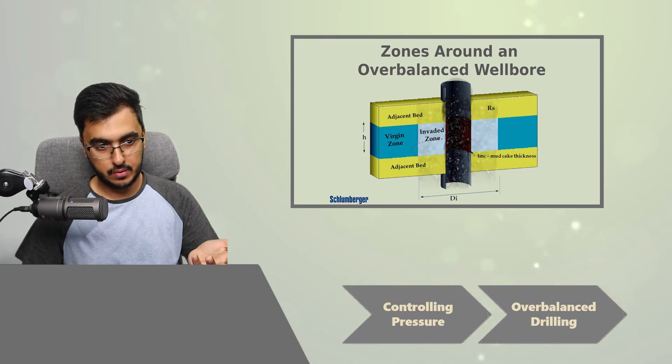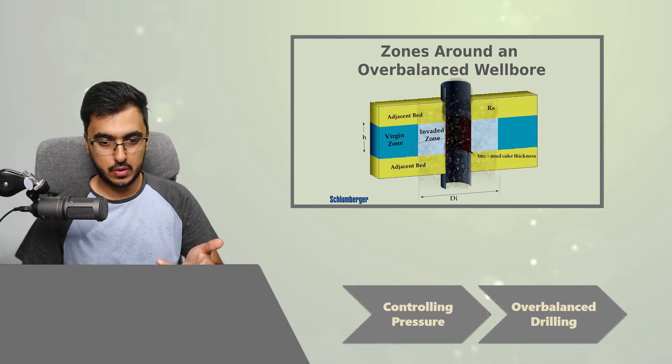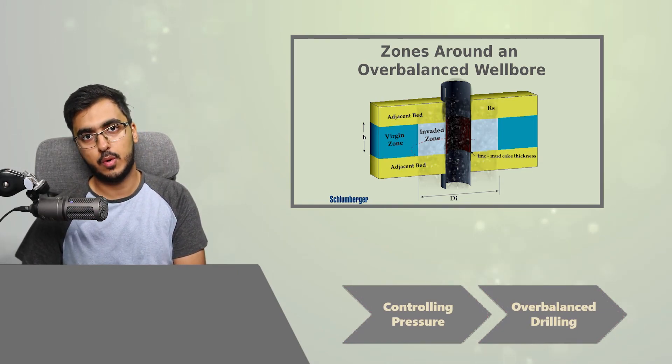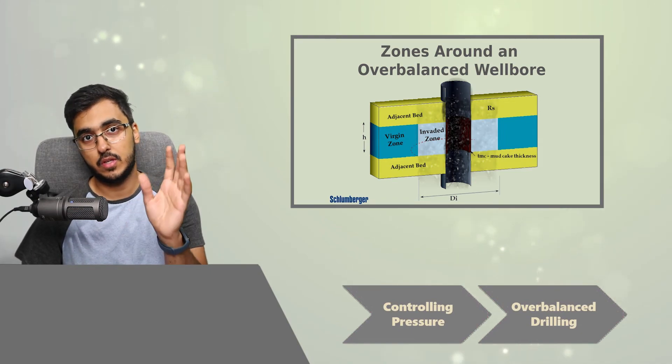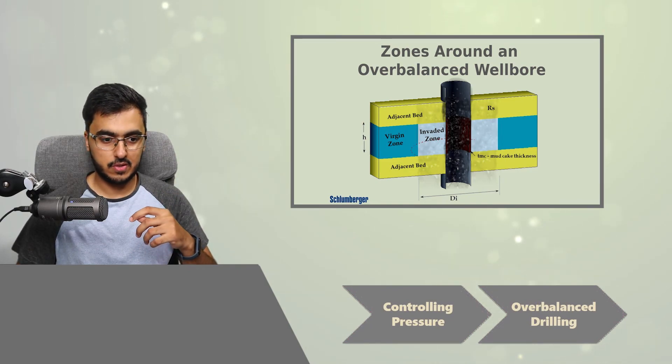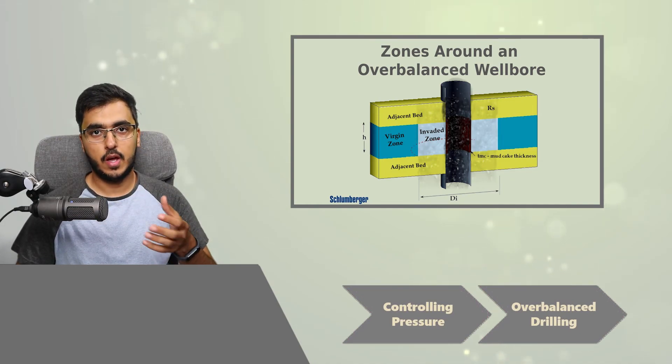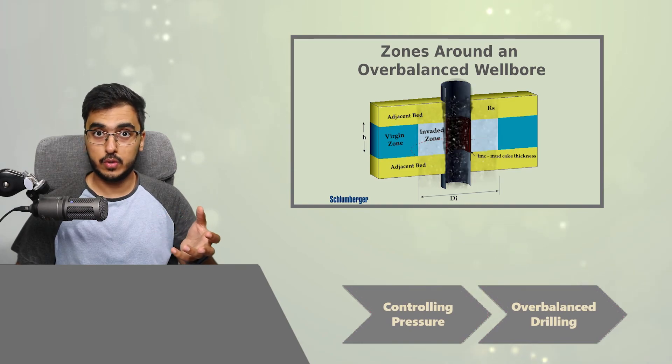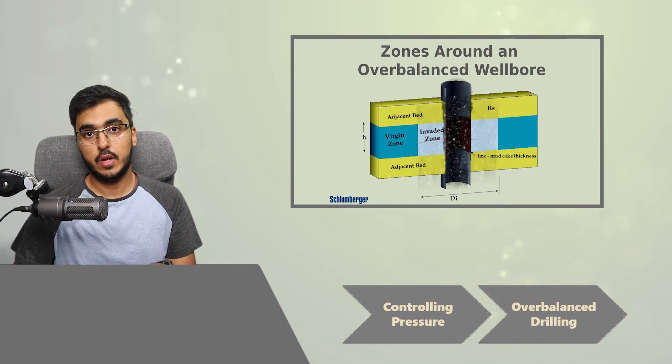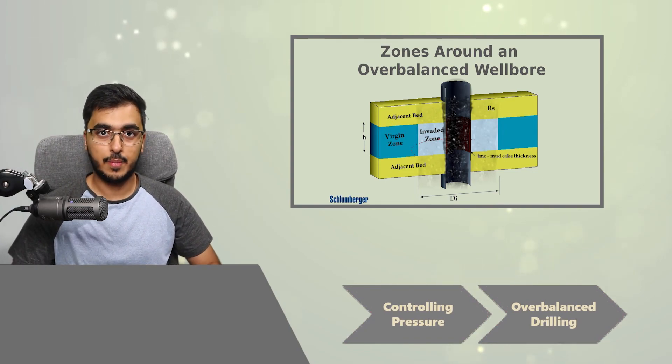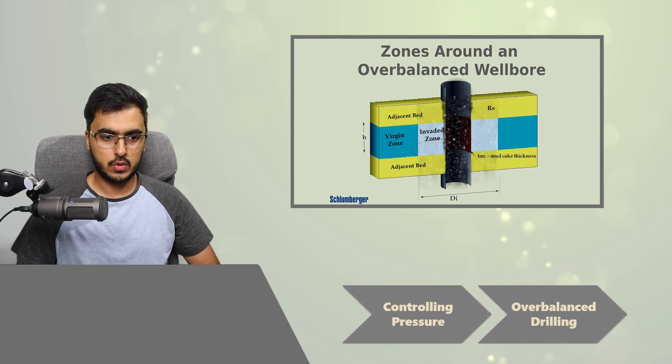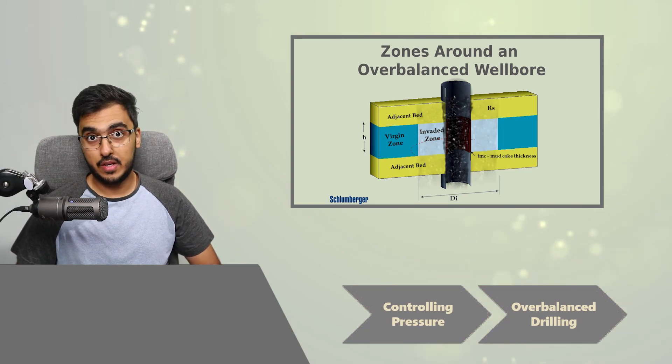And finally you have this final area which is called the virgin zone, which is the area where the mud hasn't reached because it's so far away from the wellbore that the mud didn't reach it, it didn't damage it. This invasion of drilling mud is apparent in almost all overbalanced drilling operations. So you have these zones in all of them. This is not a problem such as mud loss. It happens in all drilling operations. These zones, you have the flush zone, you have the transition zone, and you have the virgin zone in all of them. You want to reduce them, yes, but they will be there because it's just how rocks interact with drilling muds.